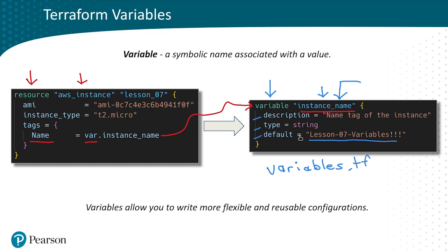So we create the symbolic name on the right hand side in the variable block, and we call on it on the left hand side within our resource or whatever other infrastructure we are defining. In a nutshell, variables allow you to write more flexible and reusable configurations. We can add as many additional variable blocks as we wish in our variables.tf file.